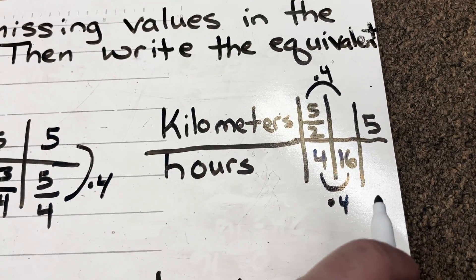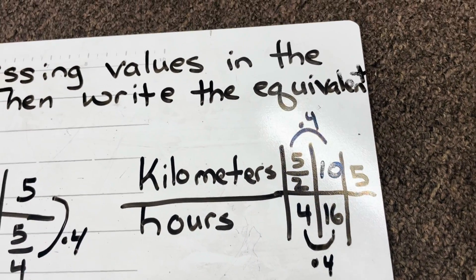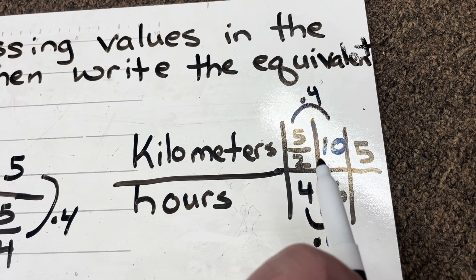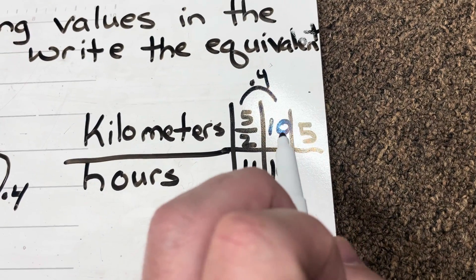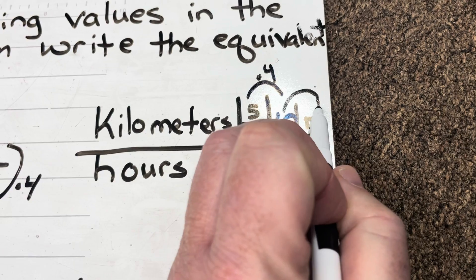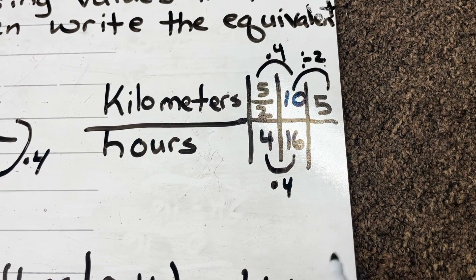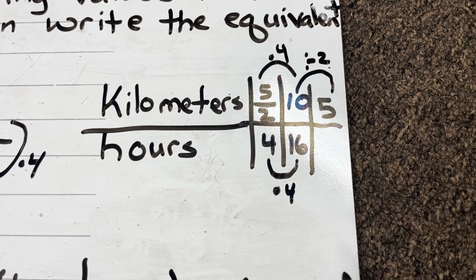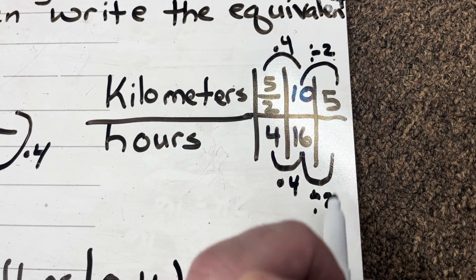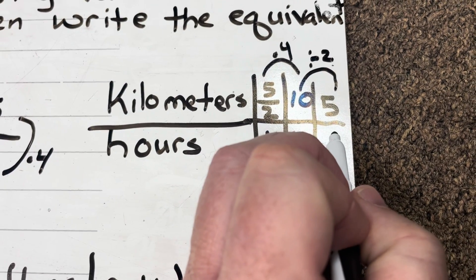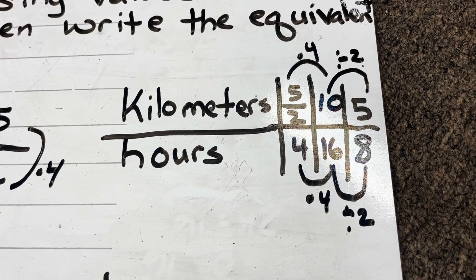5 over 2 times 4 equals 10 — because 5 divided by 2 is 2 and a half, times 4 is 10. So in 16 hours I've gone 10 kilometers. For the remaining value, I see what I did to 10 to get 5: I divided by 2. So I do 16 divided by 2, which gives me 8. I fill in 8 hours.